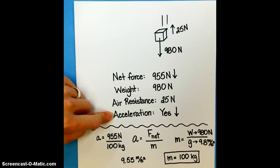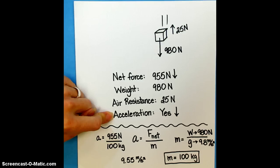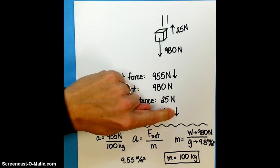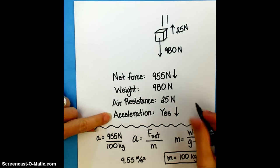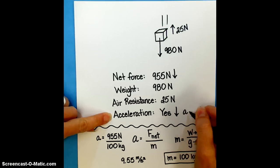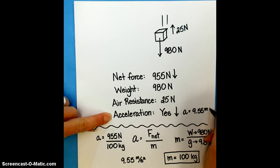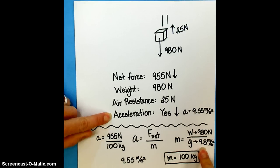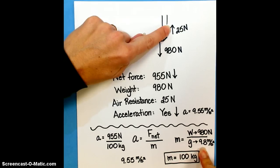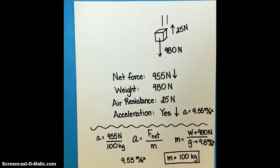So we can add a little bit of information here now. Is the box accelerating? Yes, the box is accelerating. Which way? It's accelerating down. Its acceleration is equal to 9.55 meters per second squared. Again, it's not going to accelerate at 9.8 meters per second squared because there is air resistance acting on the box, so it's going to take a little more time.